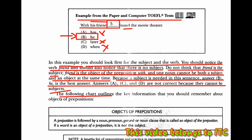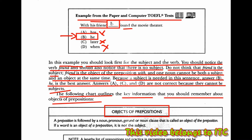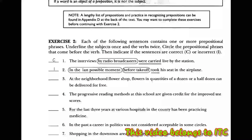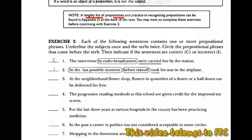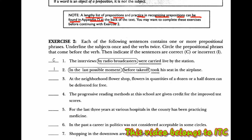Pada bagan berikut, menggaris bawahi informasi yang penting yang kamu seharusnya ingat mengenai objek preposisi. Sebuah preposisi diikuti oleh kata benda, kata ganti, gerund (yaitu kata kerja tambah -ing, jadi kata benda), maupun noun clause, yang disebut juga sebagai objek preposisi. Jika sebuah kata adalah objek preposisi, maka bukanlah subjek. Sebuah daftar yang panjang mengenai preposisi dan latihan dapat ditemukan dalam Appendix D pada bagian belakang dari teks.